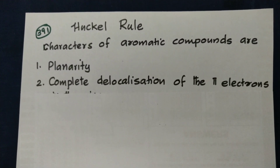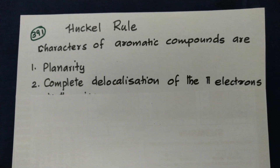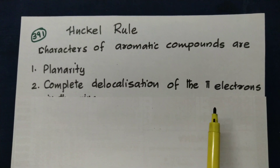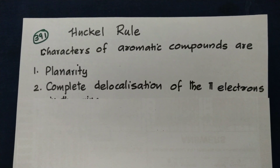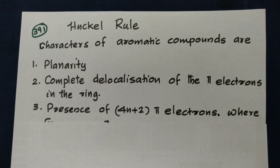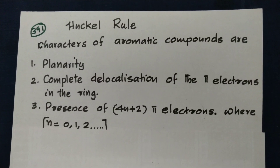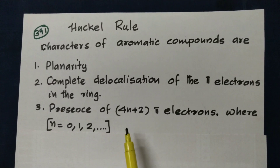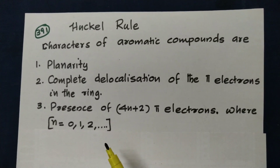Condition two: the compound has complete delocalization of pi electrons. Condition three: it must have 4n plus 2 pi electrons. That is the Hückel rule of pi electrons.